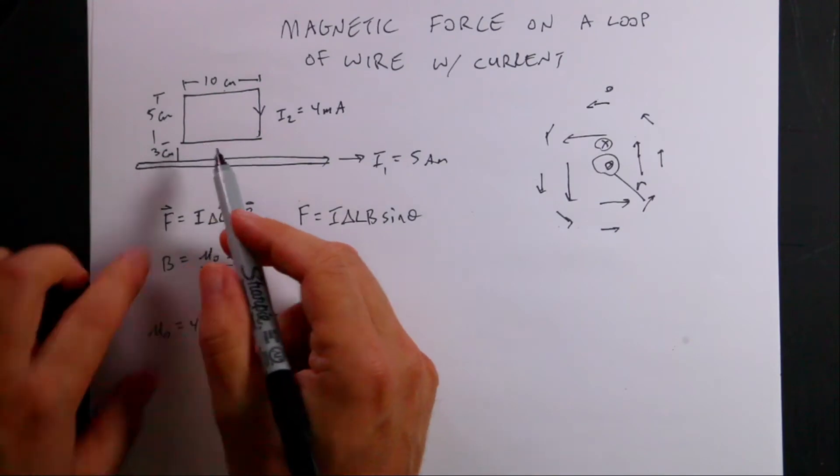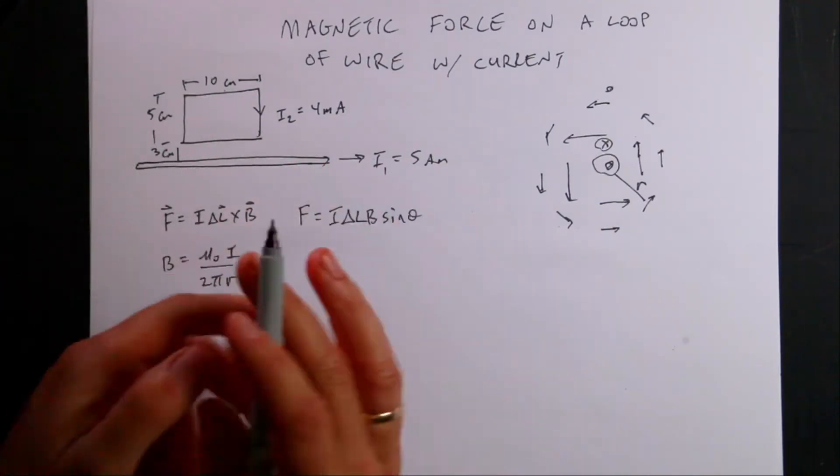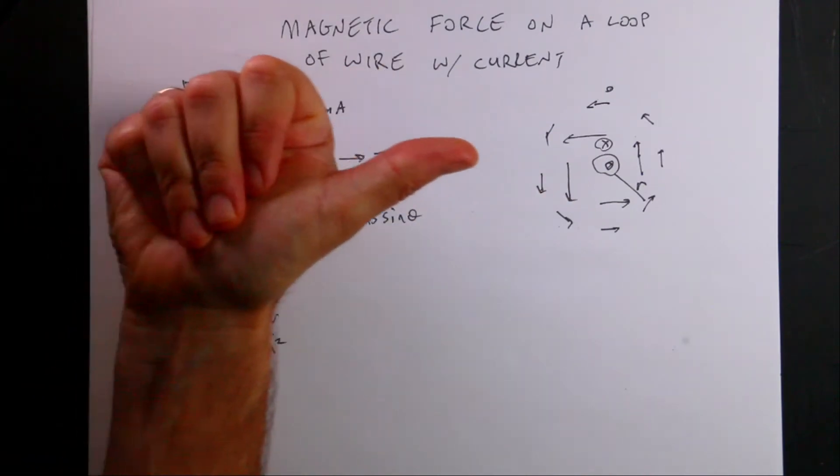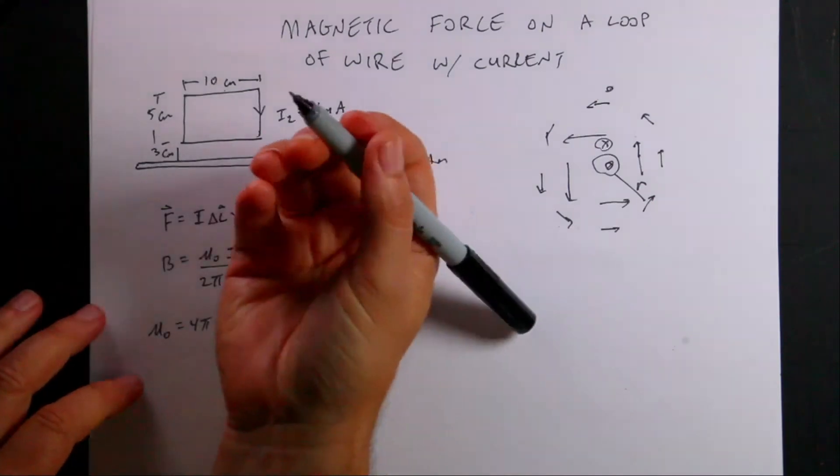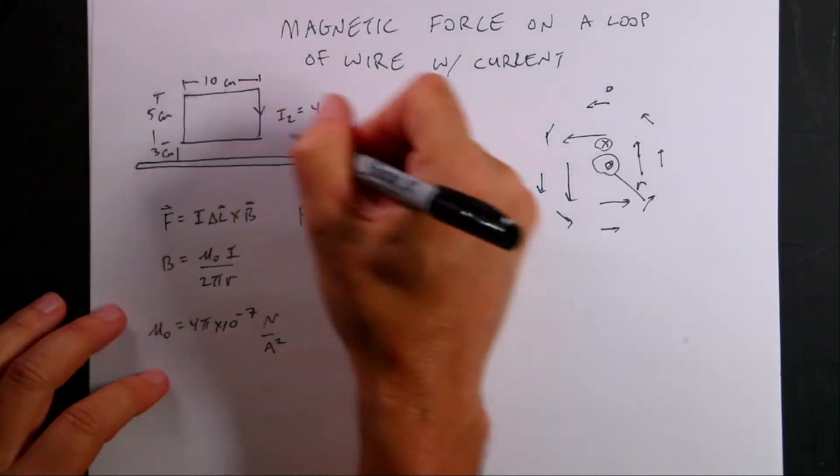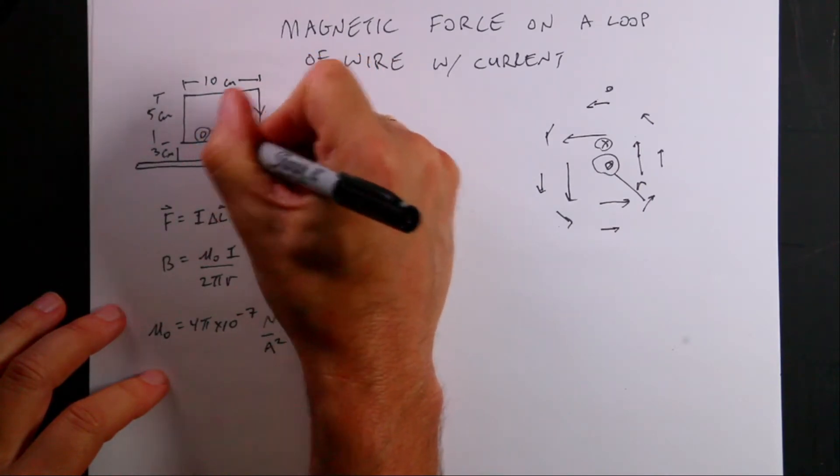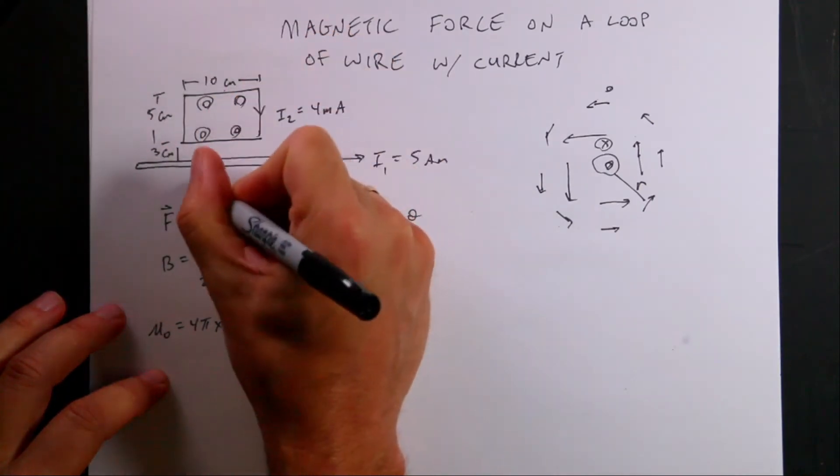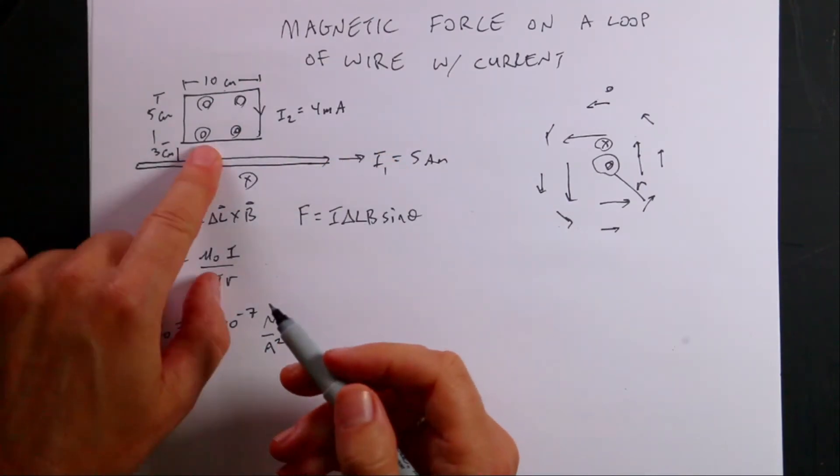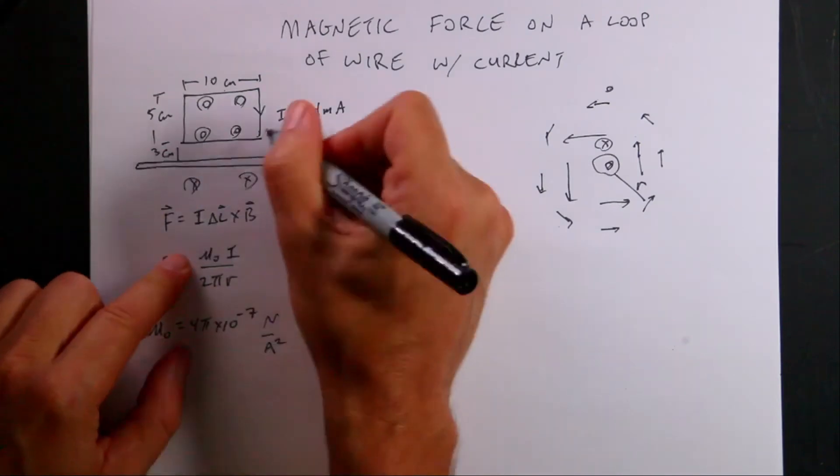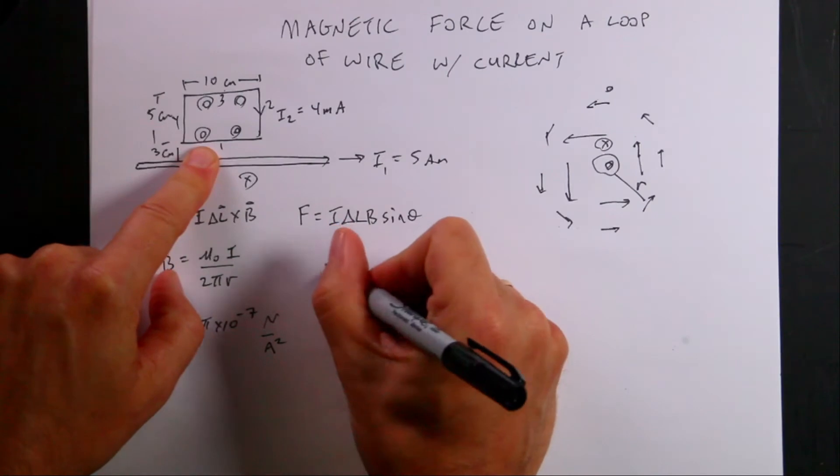Let's draw the magnetic field here on this paper. If I put my thumb in the direction of the current, then my fingers show the direction of the magnetic field. It's coming out of the paper on that side and it would be going in on this side. So that's important because this is my B. Let's take this into pieces. Let's call this piece 1, 2, 3, 4. And let's find F1.